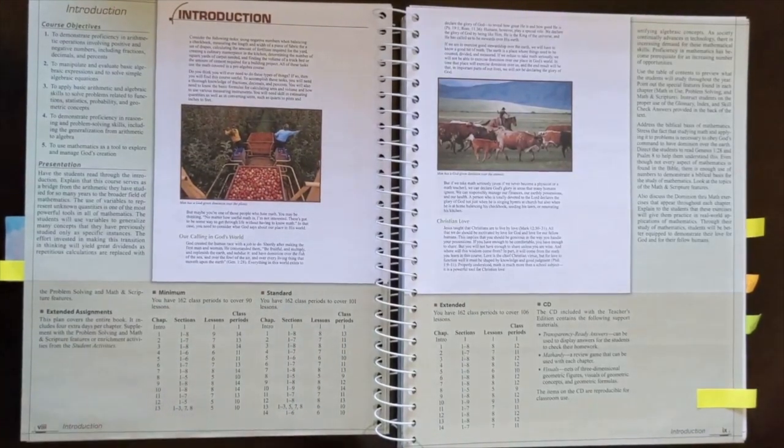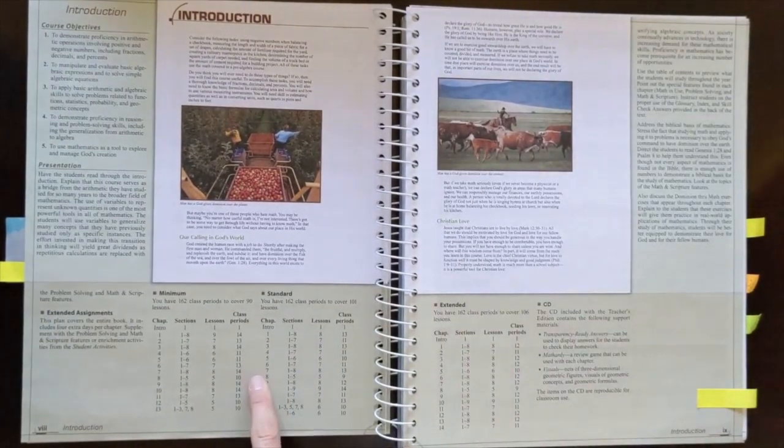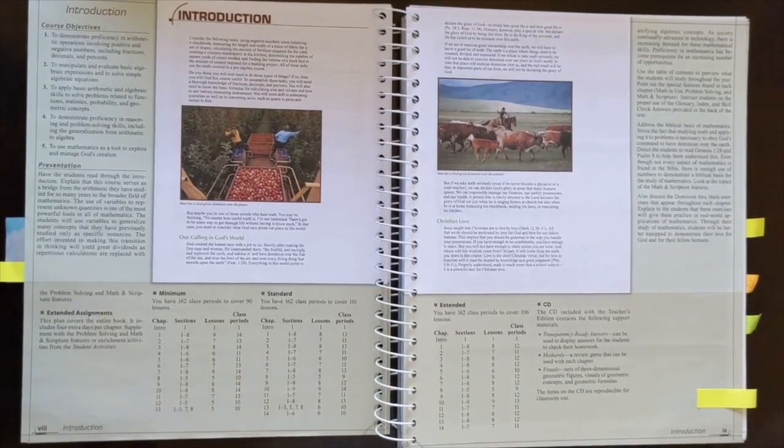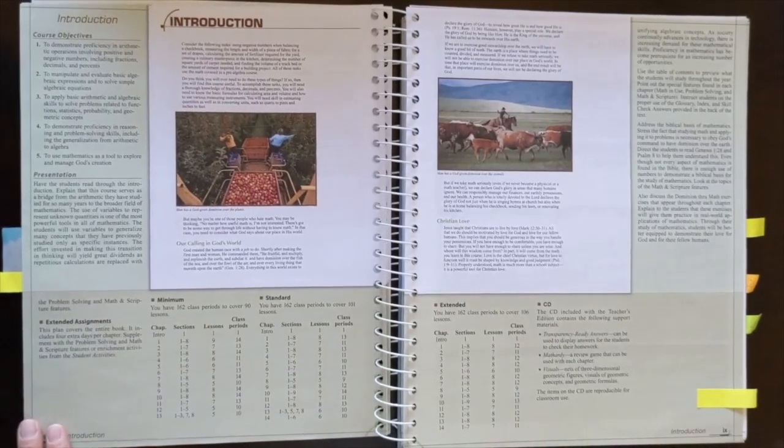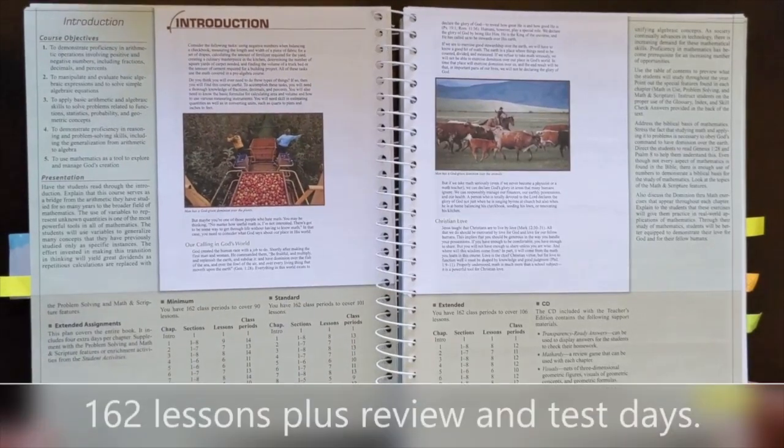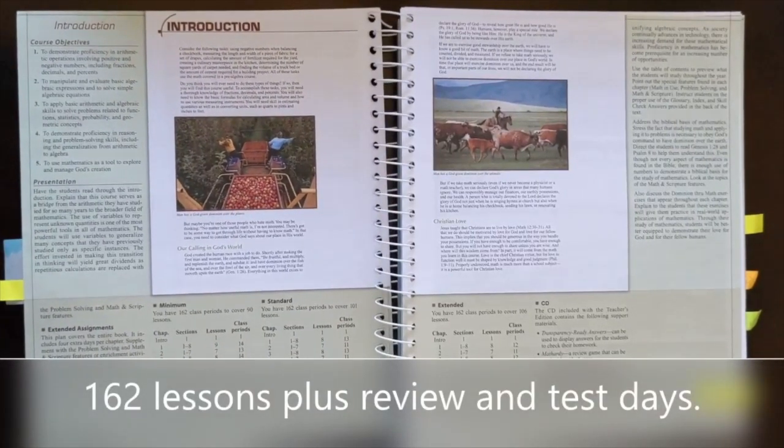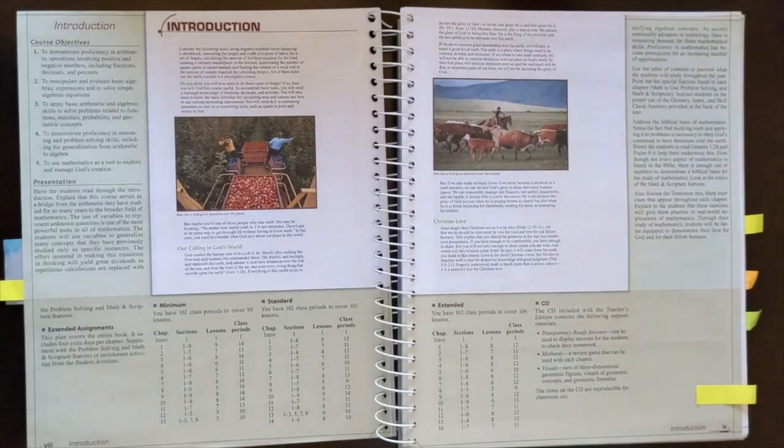Looking at how many lessons, this is going to be 162 teaching lessons in this class and that means it is a full year course. It is also going to be a layout that goes in 14 chapters. It's going to be laid out and organized topically and it's going to build sequentially.